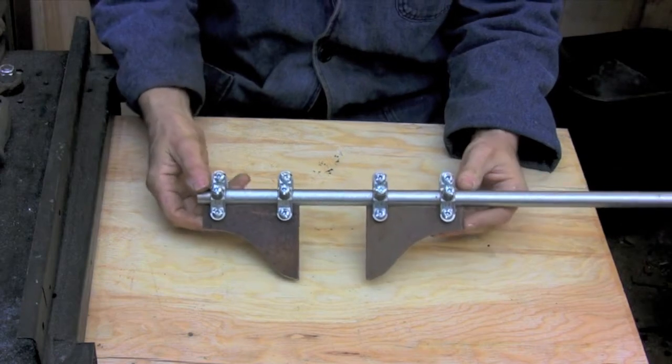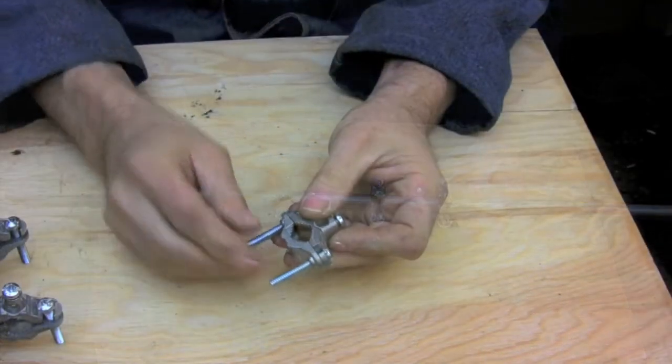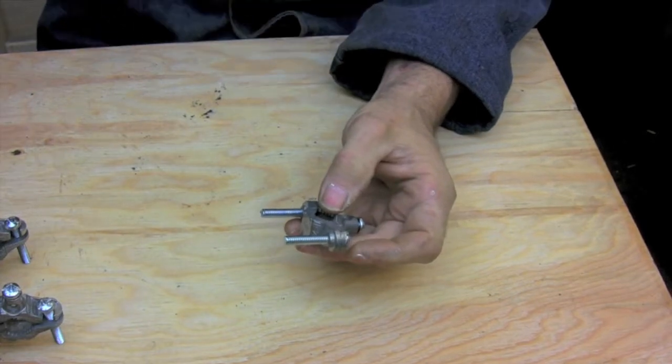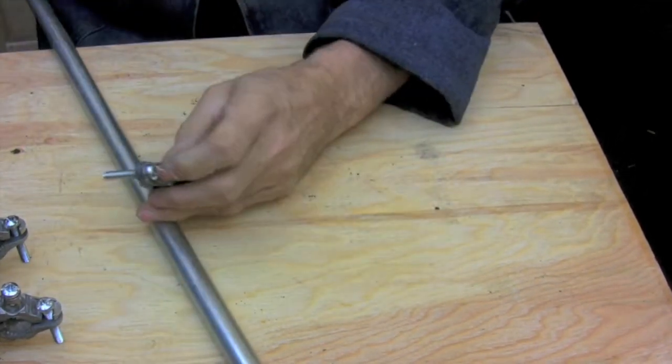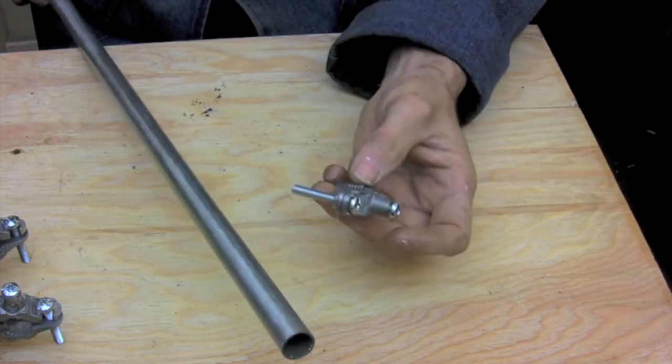So here's what the finished gauge looks like. The two legs of the gauge are assembled using regular electrical ground clamps and the whole thing gets mounted onto a half inch electrical conduit.